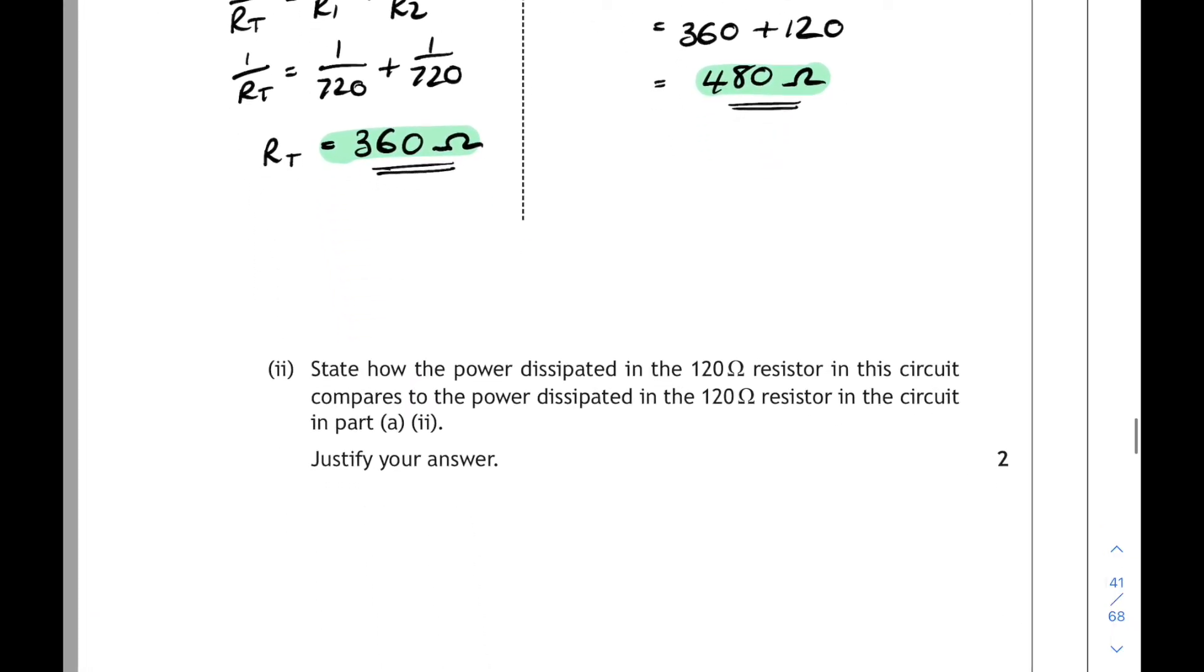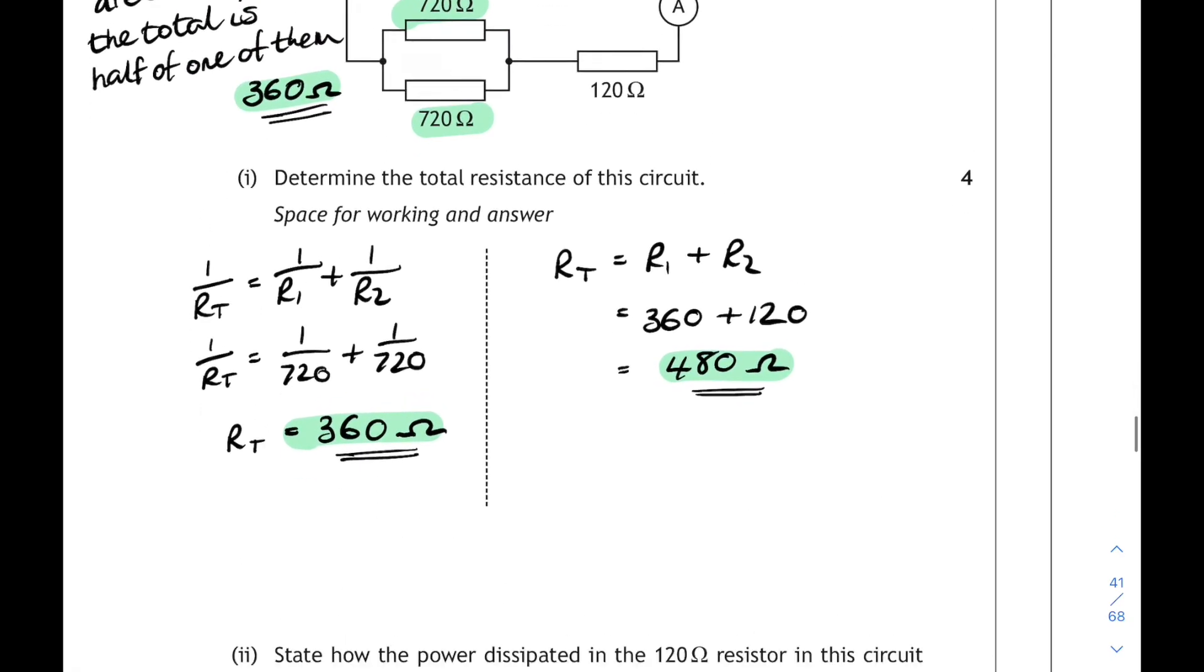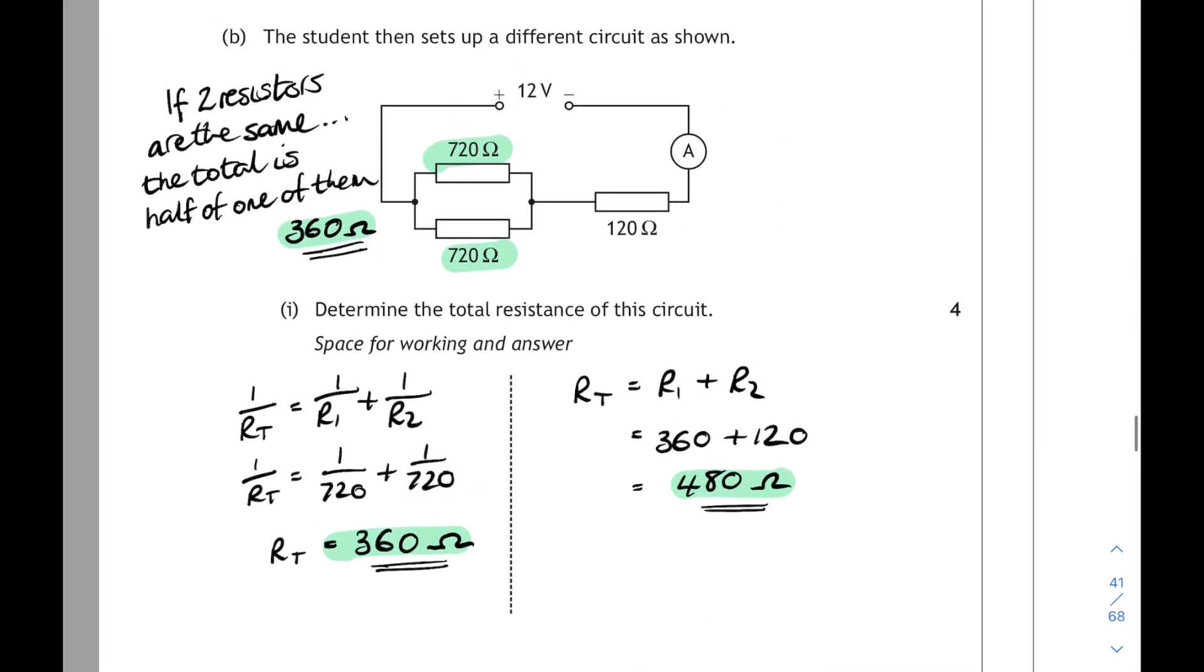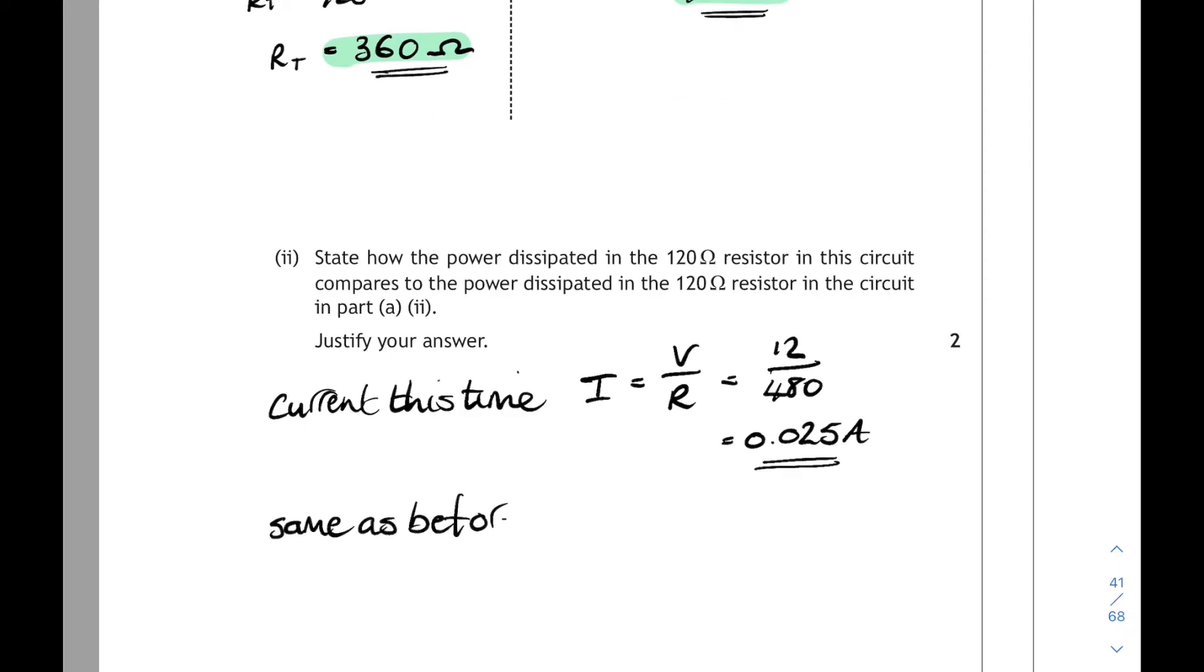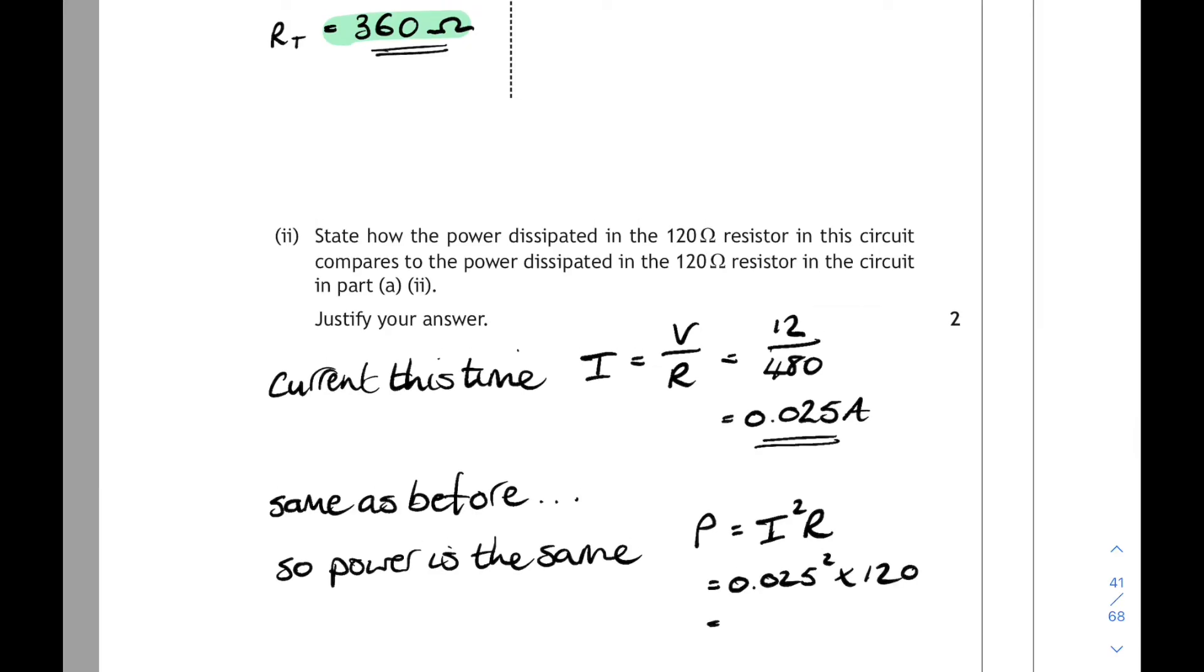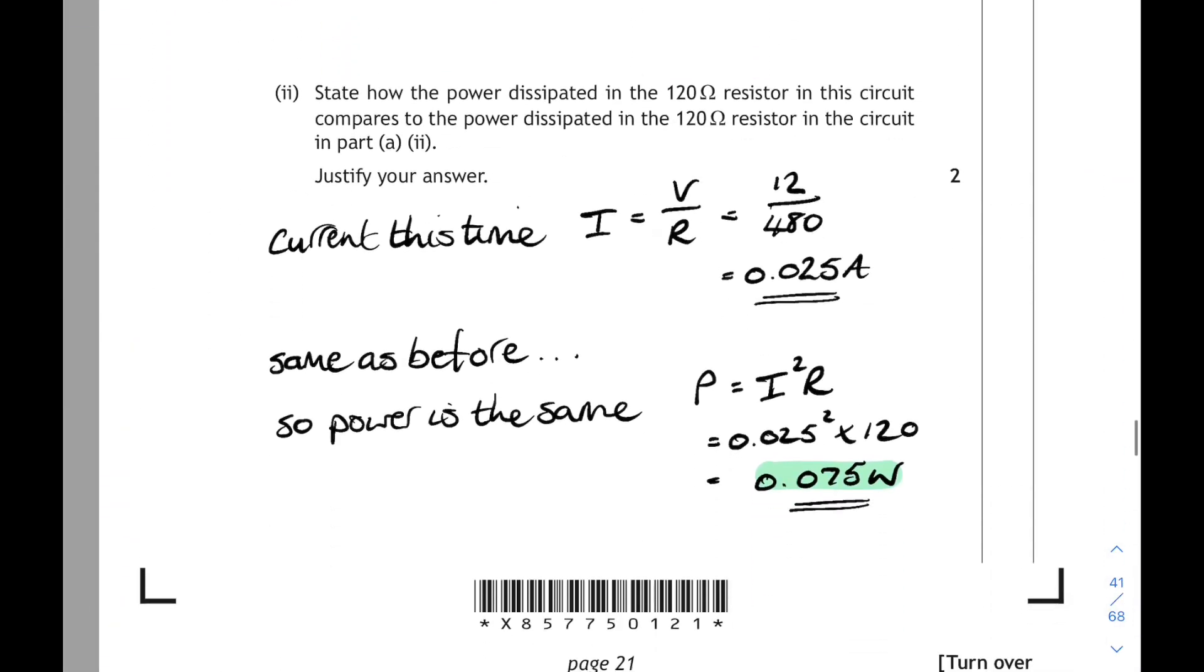And state how the power dissipated in the 120 ohm resistor in this circuit compares to the power dissipated in the 120 ohm resistor in the circuit in part A. Well the current this time, if we work out the current again, using V over R, still 12 volts supply, total resistance was 480, the current is going to be the same as before. And if the current is the same as before, then the power will be the same as before. Because P equals I squared R, the current is the same, it's still a 120 ohm resistor. So we're still going to get a power of 0.075 watts. It's a bit sneaky. Anyway, let's move on.